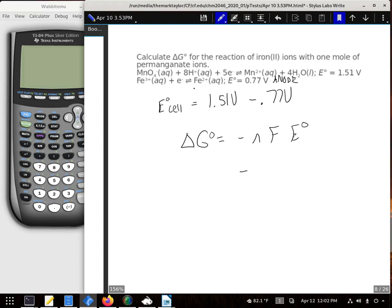And our n, we're going to get from our least common multiple between our two electrons. So this is five moles of electrons. Faraday's constant is at 96,485 Coulombs per mole of electron. And then our E° is what we get from our first little math.